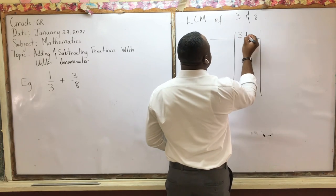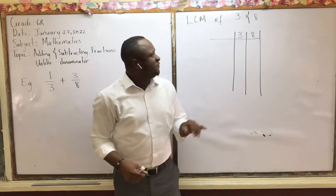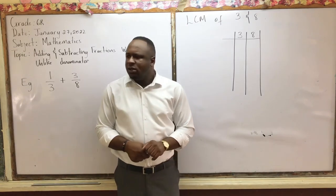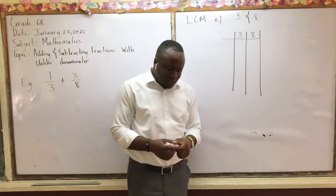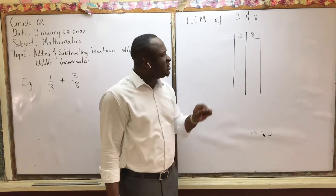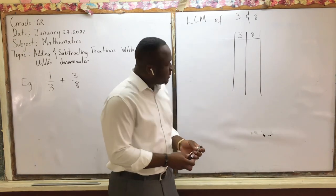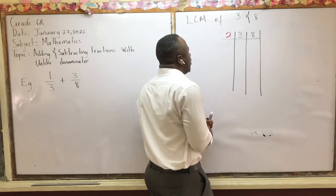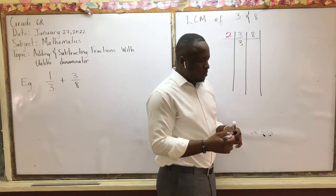We draw the divisor table — nothing too fancy — to find the LCM of three and eight. The steps: start with the smallest prime number. We only use prime numbers when using the divisor method to find the LCM. Check if it can go into any of these numbers without leaving a remainder. We can start with two. Can two go into any of these numbers? Yes — eight. Two doesn't go into three, so we bring three down as is. Two into eight goes four times.